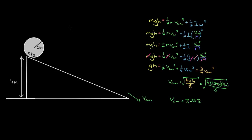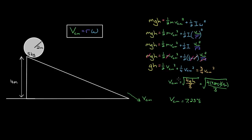To recap: even though the speed of the center of mass of an object is not necessarily proportional to the angular velocity, if the object is rolling without slipping, the relationship v = rω holds. This allows you to turn equations with two unknowns into equations with only one unknown, which lets you solve for the speed of the center of mass.